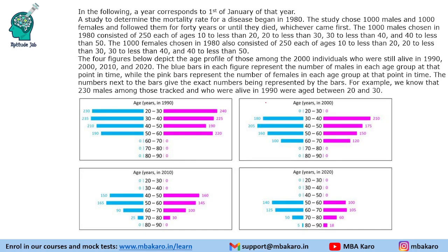A study to determine the mortality rate for a disease began in 1980. The study chose 1000 males and 1000 females and followed them for 40 years until they died, whichever came first. The 1000 males chosen in 1980 consisted of 250 in each of these age groups: 10 to less than 20, 20 to less than 30, 30 to less than 40, and 40 to less than 50.